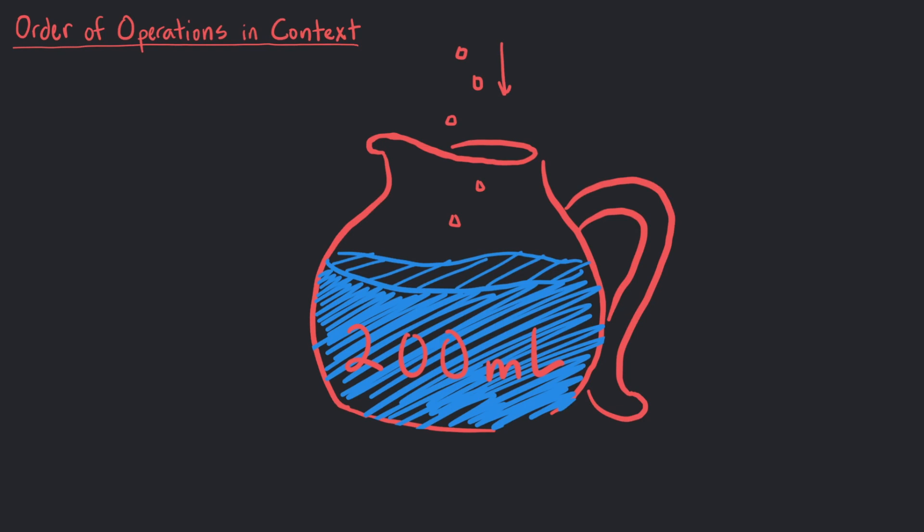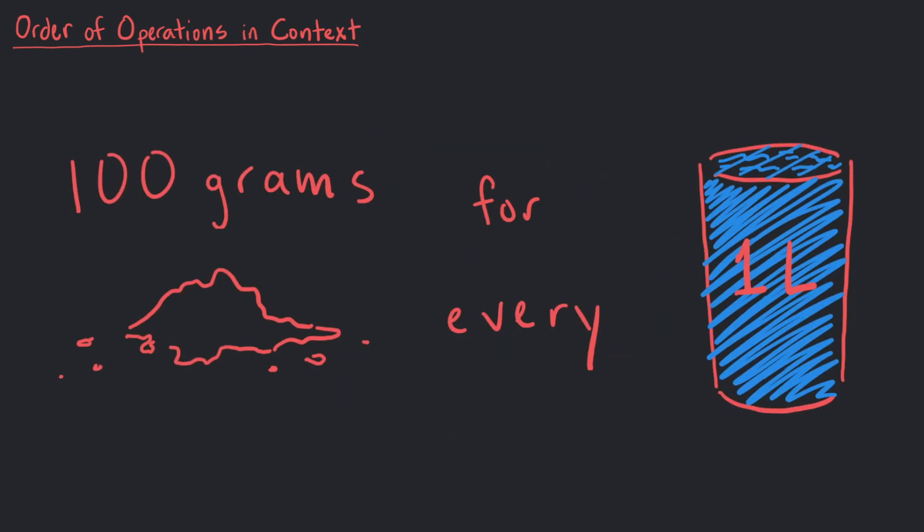If we were told that there is 100 grams of sugar per liter, how many total grams of sugar are in this recipe?